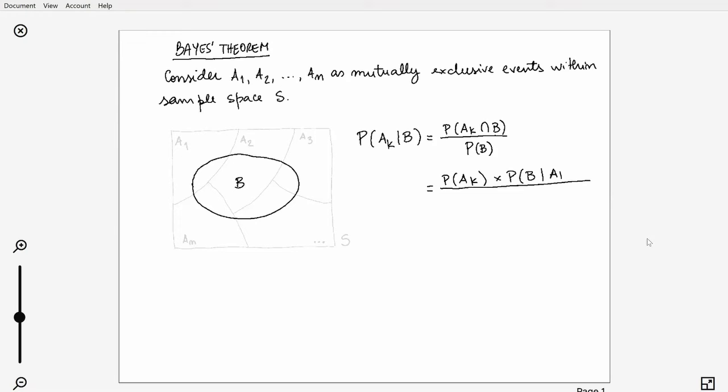when you know that Ak has already happened. And then you divide that product by the sum of all likely products for all the other A events within the sample space.